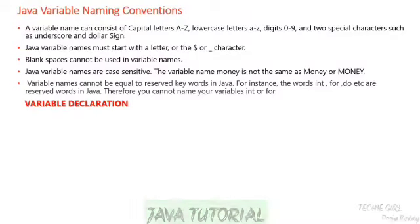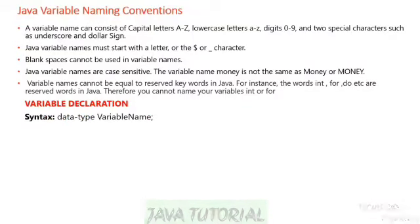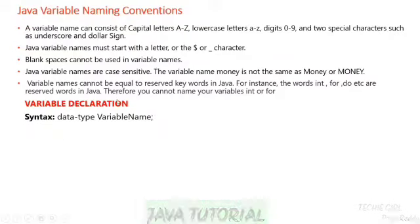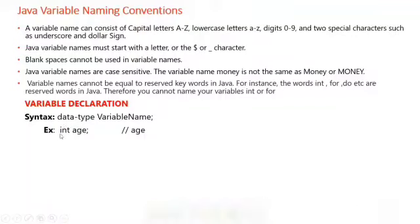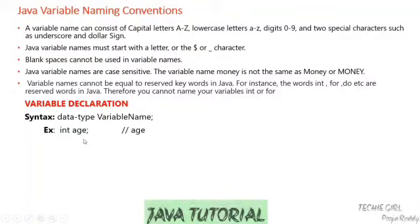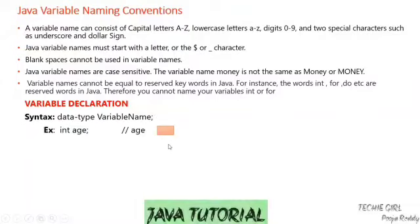Now let's see how to declare a variable. The syntax is: data type followed by a variable name. The data type specifies the type of data you are storing. For example, 'int age' — here int is the data type and age is the variable name. The int data type can only store non-decimal values. Here, age is a name given to a memory location, but I'm just declaring it without assigning any value.